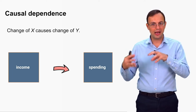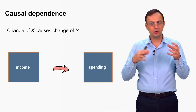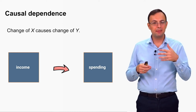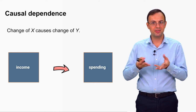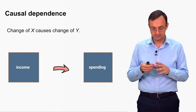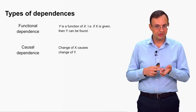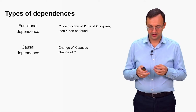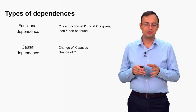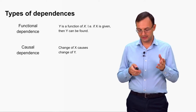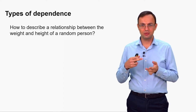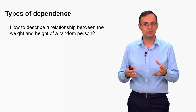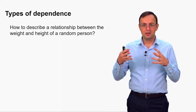So it is possible to change y by changing x — a change of x causes a change of y — but there may be no universal formula describing these changes for all objects of interest. To summarize: causal dependence means that a change of x causes a change of y. But there are also situations when there is obviously no functional dependence and no causal dependence, yet we still say there is some kind of dependence, some association or relationship between two variables.